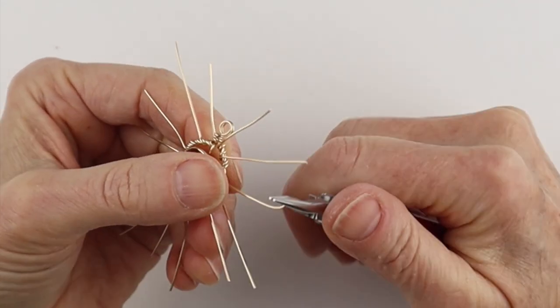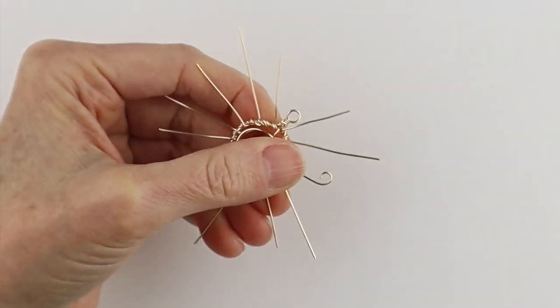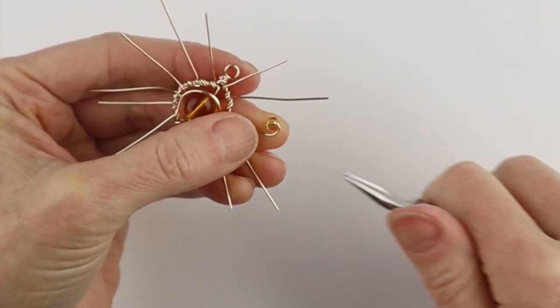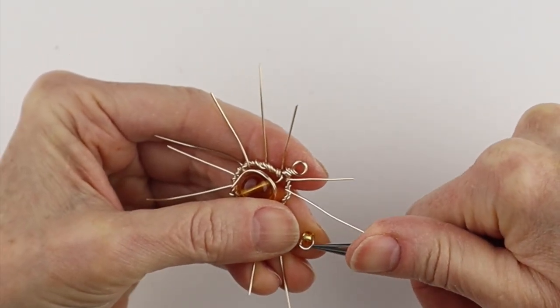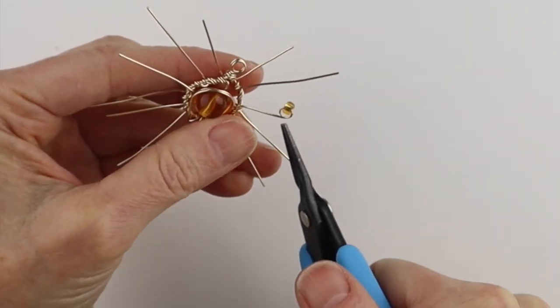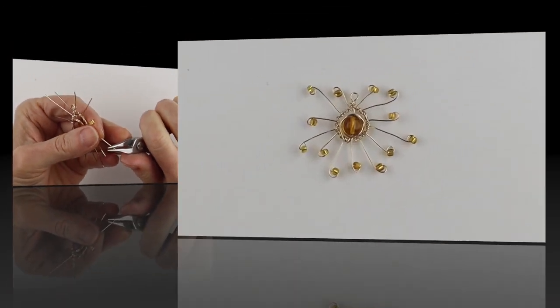So just take the round pliers, bring that one around about like that. Take your seed bead, slide it on there, and then you want to close that up. If it's easier, use the tweezer nose pliers and you want to just close up that hole. So now we're going to go around and do the other one.